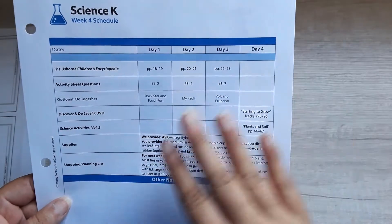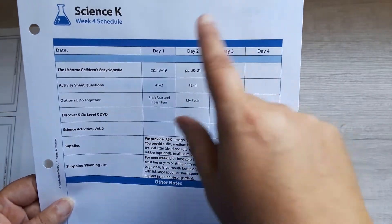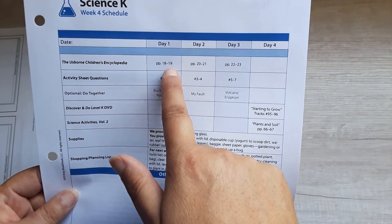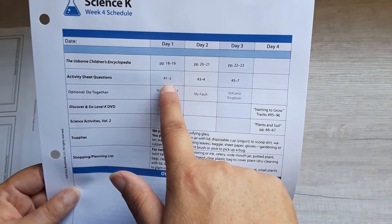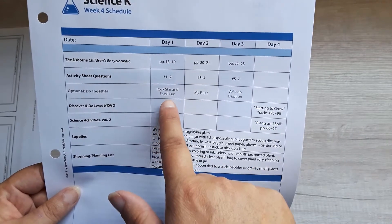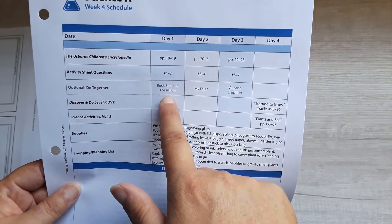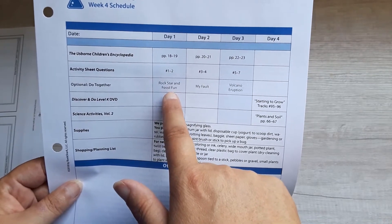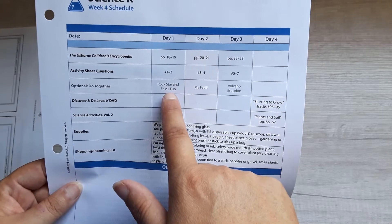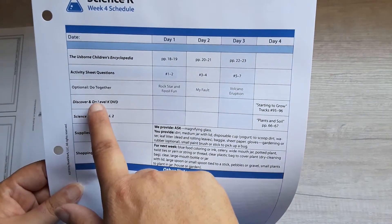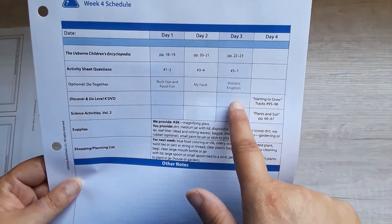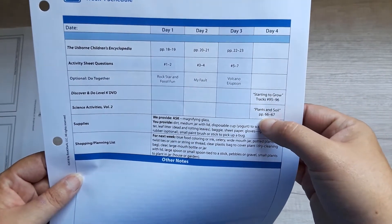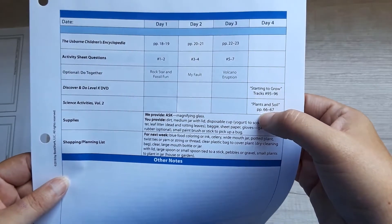Basically, you would open this up to this week, grab your Usborne Children's Encyclopedia, open it up to these pages, read these pages, and do the activity questions with your child. If you chose to do the optional activities, you could do those right then — I usually save stuff like that for right before or right after lunch. And then for the fourth day, you're actually watching the DVD and then doing an actual experiment.